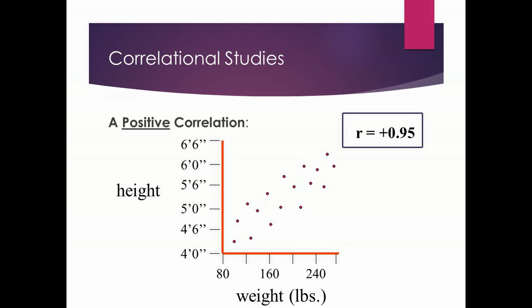We call this a positive correlation, because as one variable goes up, so does the other, and as the first variable goes down, so does the other — height and weight go up and down together. I've shown a correlation coefficient of positive 0.95. The positive sign tells you it's a positive correlation. The value 0.95 is pretty close to 1, which means it's a strong correlation. When a correlation coefficient is close to either minus 1 or positive 1, that indicates a strong relationship between variables.